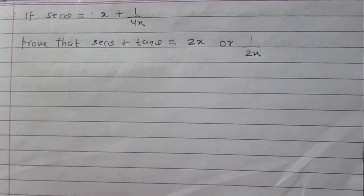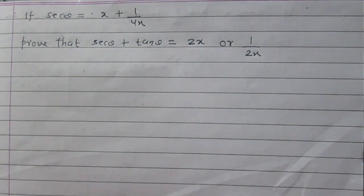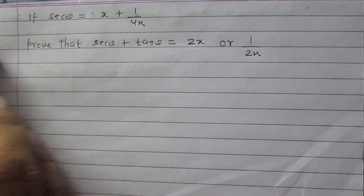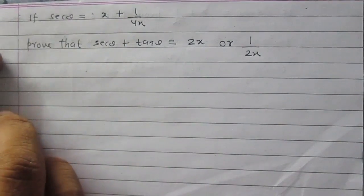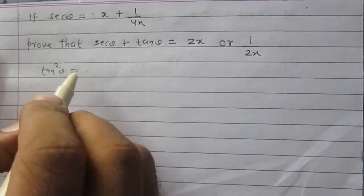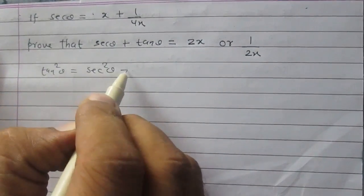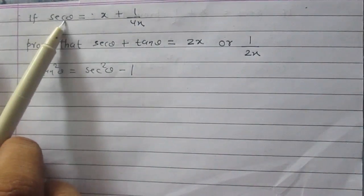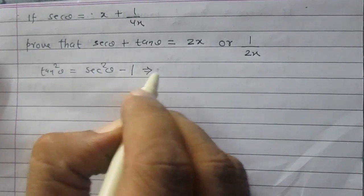If sec θ is equal to x plus 1 upon 4x, prove that sec θ plus tan θ is equal to either 2x or 1 upon 2x. We are given that sec θ equals x plus 1 upon 4x, and according to trigonometric identities, we know that tan² θ is equal to sec² θ minus 1. We can substitute the value of sec θ here.